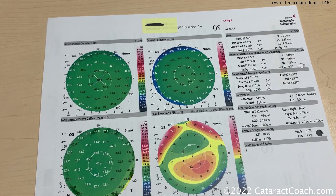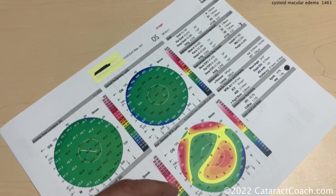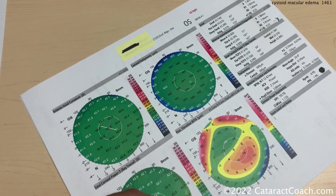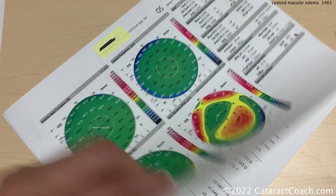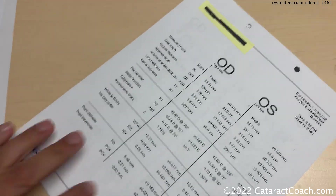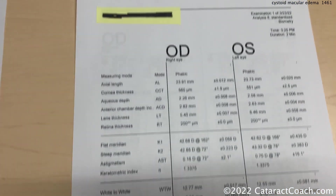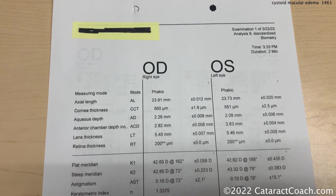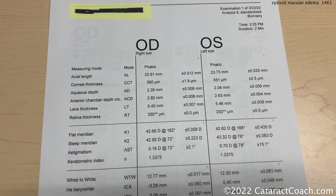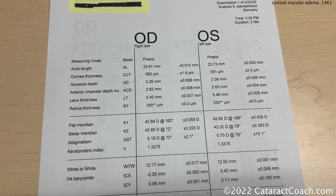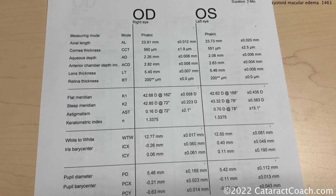Let's make this patient very happy. Let's look at the rest of the pre-op scans. We also did some biometry. Here's the biometry — both eyes are relatively the same. Typical axial length in the 23mm range, AC depth about 2.6 to 2.8. Everything looks pretty good.